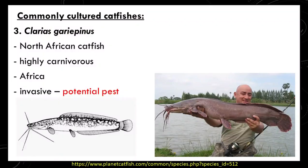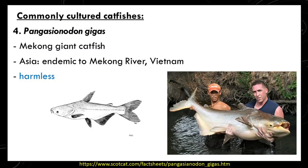The North African catfish, or Clarius garapinus, is a highly carnivorous species native to Africa and is an invasive species with the potential to be a pest. The giant freshwater catfish, or Pangasianidon hegas, is native to the Mekong River in Vietnam — also called the Mekong giant catfish — and is listed as harmless by experts.